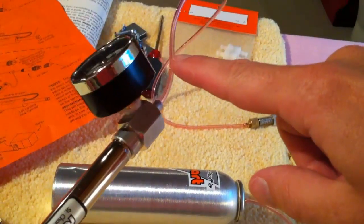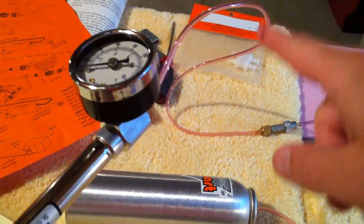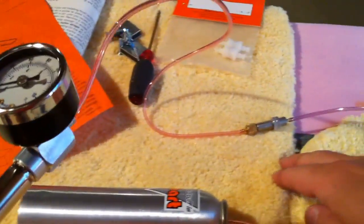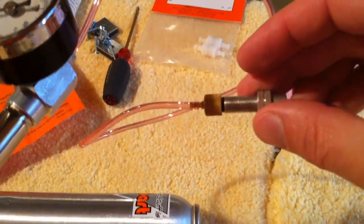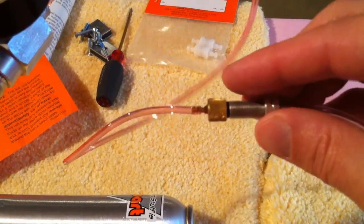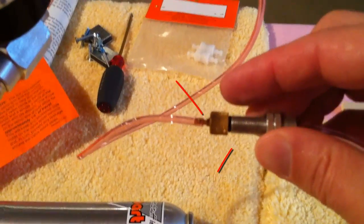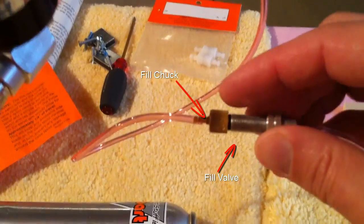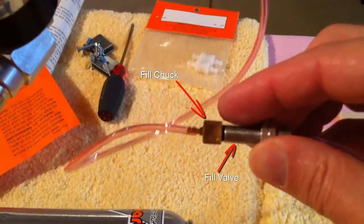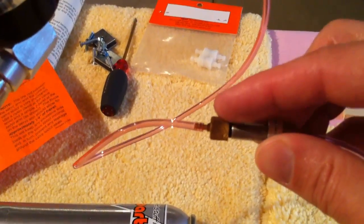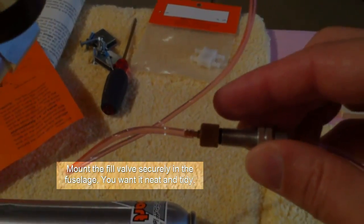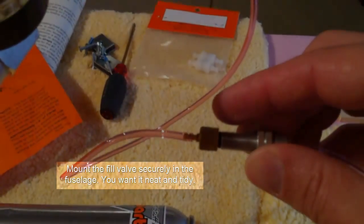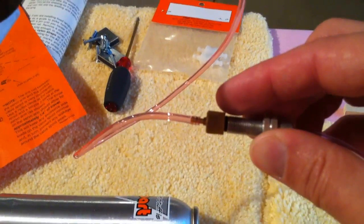I've gone ahead and hooked up the airline from my pump to the fill valve over here. As you can see, there's a small fitting that connects to the fill valve - this is the fill chuck and that screws on. There's a threaded end here and then there's a rubber gasket to seal it, and that will just be the point of connecting somewhere in the fuselage to connect when I need to fill up the air tank.